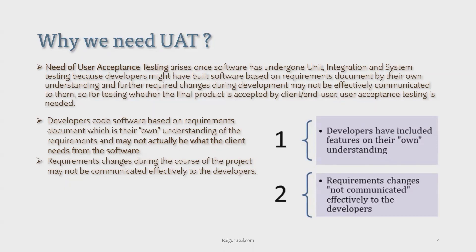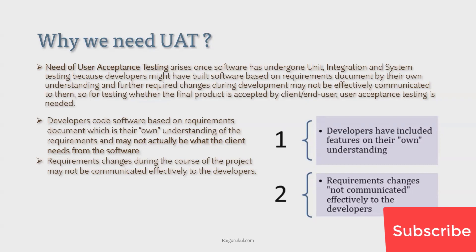Software has undergone unit, integration, and system testing, but developers might have built software based on their own understanding of BRD documents, and further required changes during development may not have been effectively communicated to them. To avoid these types of scenarios, UAT needs to be done. There are two segregations: either testing is done by the end user or client's team, or some organizations have a separate UAT team.